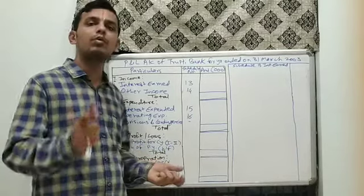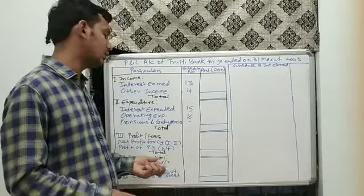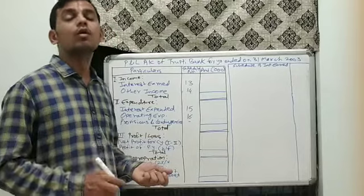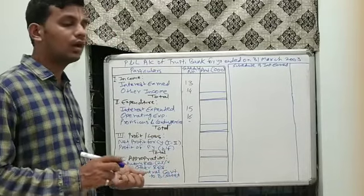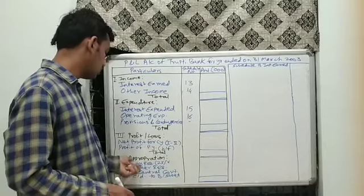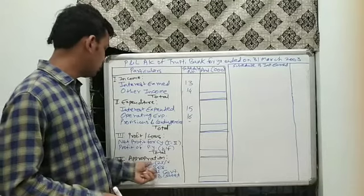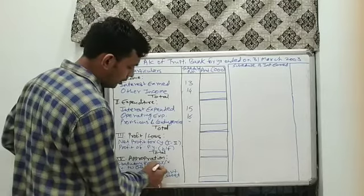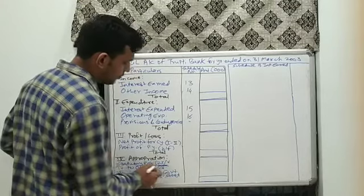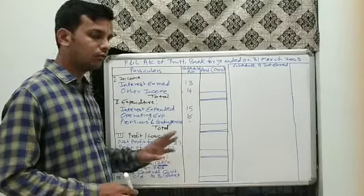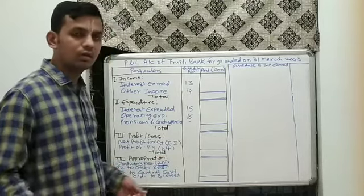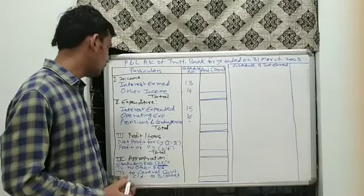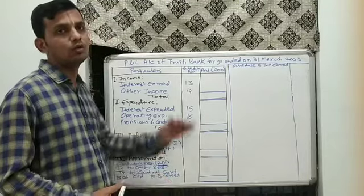The previous year's profit will be provided in the question, either in the balance sheet, named as profit of previous year, P&L account opening balance, or previous year profit. The fourth part is appropriation: first is statutory reserve at 25% compulsory — 25% of the current year profit. Then transfer to other reserve as given in the adjustment, transfer to central government also given in the adjustment, and the balance is transferred to the balance sheet.